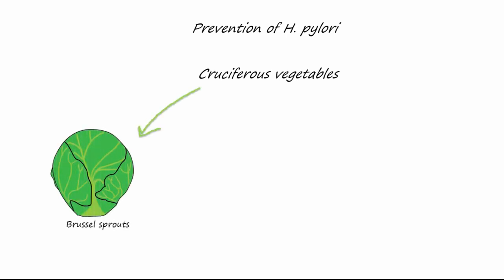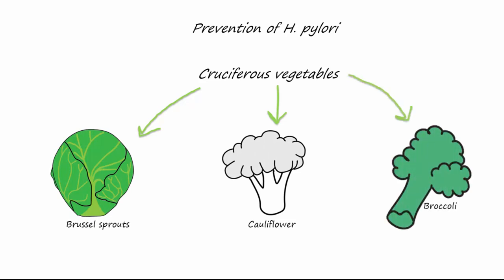One way to help prevent an H. pylori infection is to increase the intake of cruciferous vegetables such as Brussels sprouts, cauliflower, and you guessed it, broccoli. Raise your hand if you love the taste of cruciferous vegetables. Many people don't really like the taste.